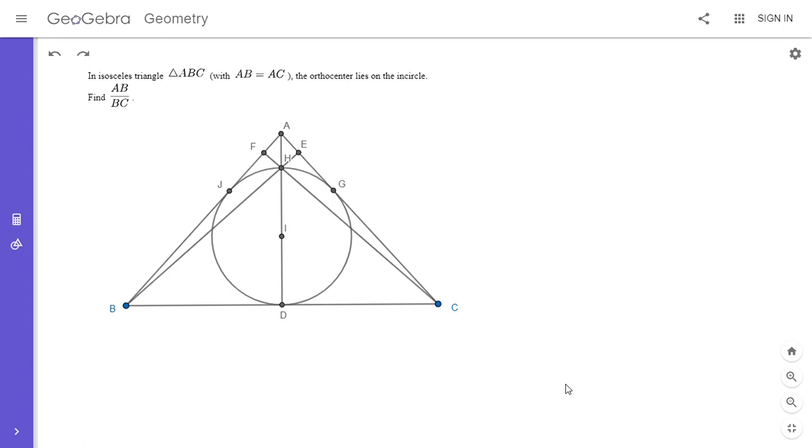So first I'm going to point out a certain symmetry. Point D in the figure, it's both the midpoint of BC, the foot of the altitude from A, and the point of tangency of the incircle. That's pretty clear to see since AB is equal to AC. So I'm just going to start by noting that.